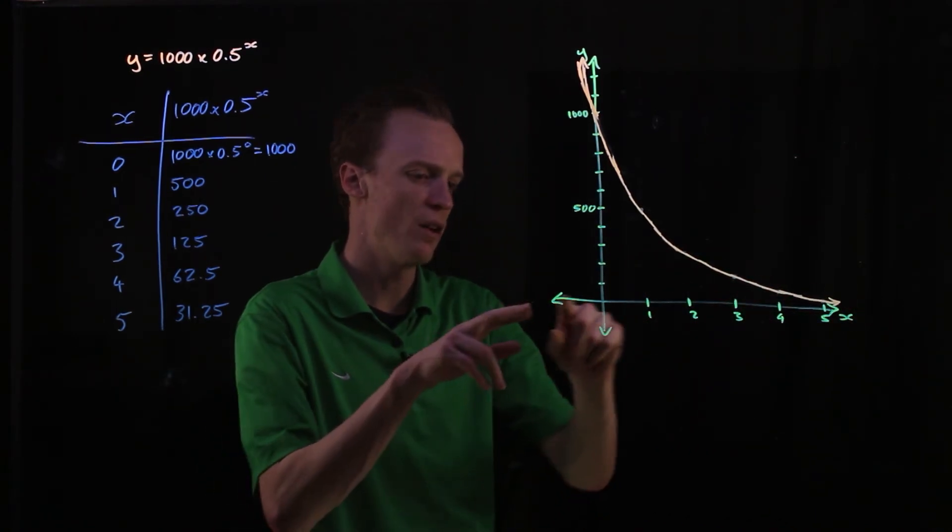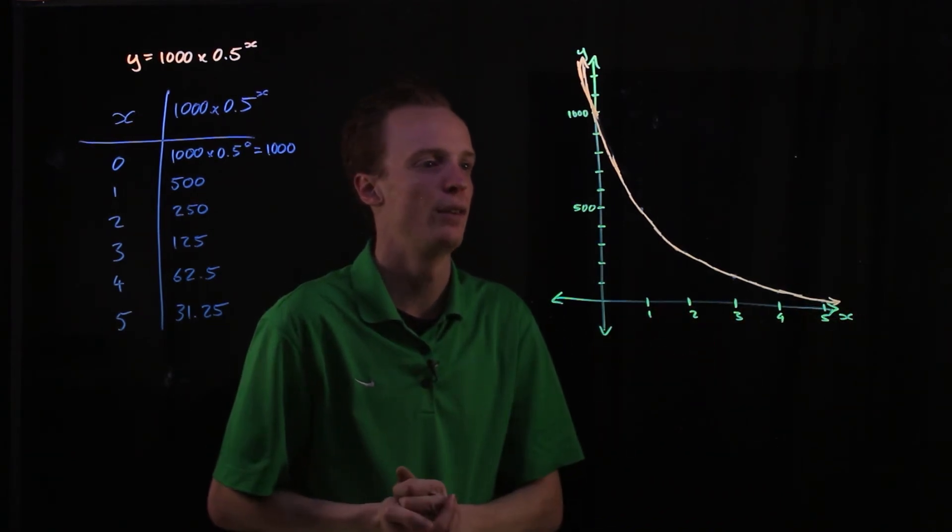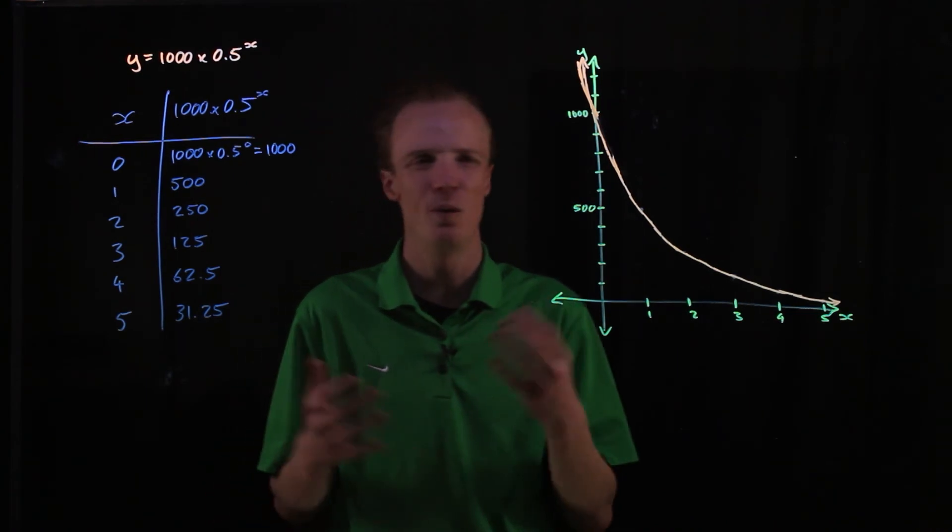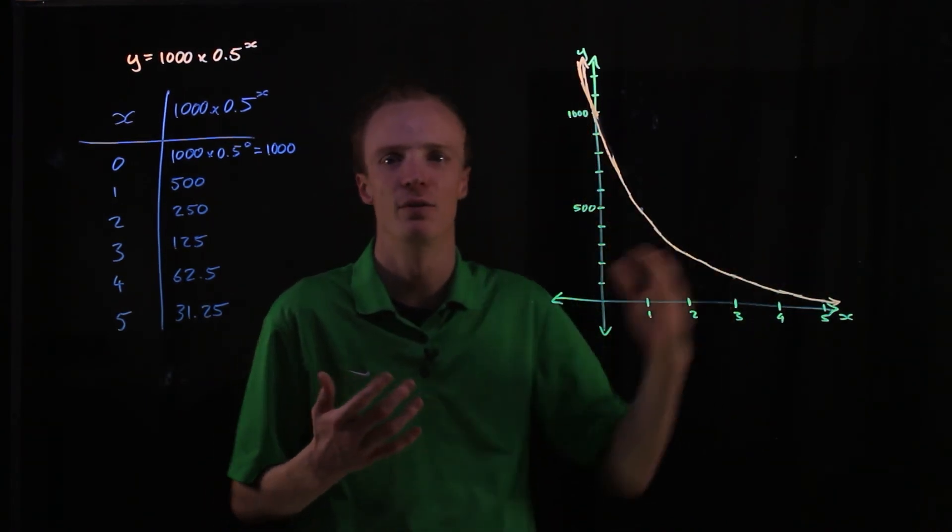Since it's going to have a horizontal asymptote at the x axis. So when we're looking at exponential decay functions, all exponential decay functions have this kind of shape.